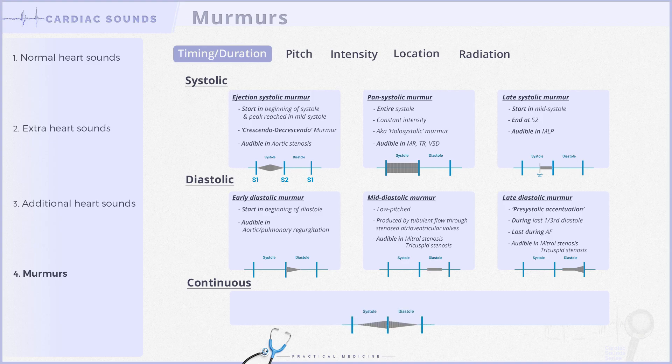Finally, there's the continuous murmur. As mentioned earlier, it does not originate in the heart, but rather in vascular abnormalities like patent ductus arteriosus or over an AV fistula. It's also known as a machinery murmur and is heard during both systole and diastole.